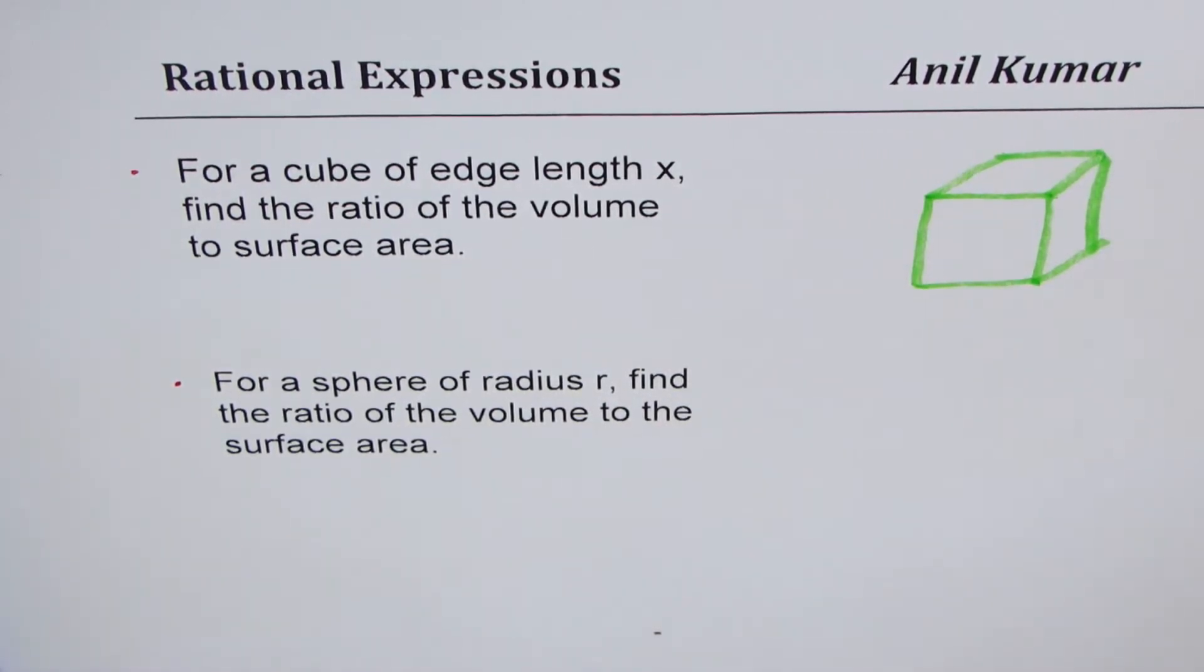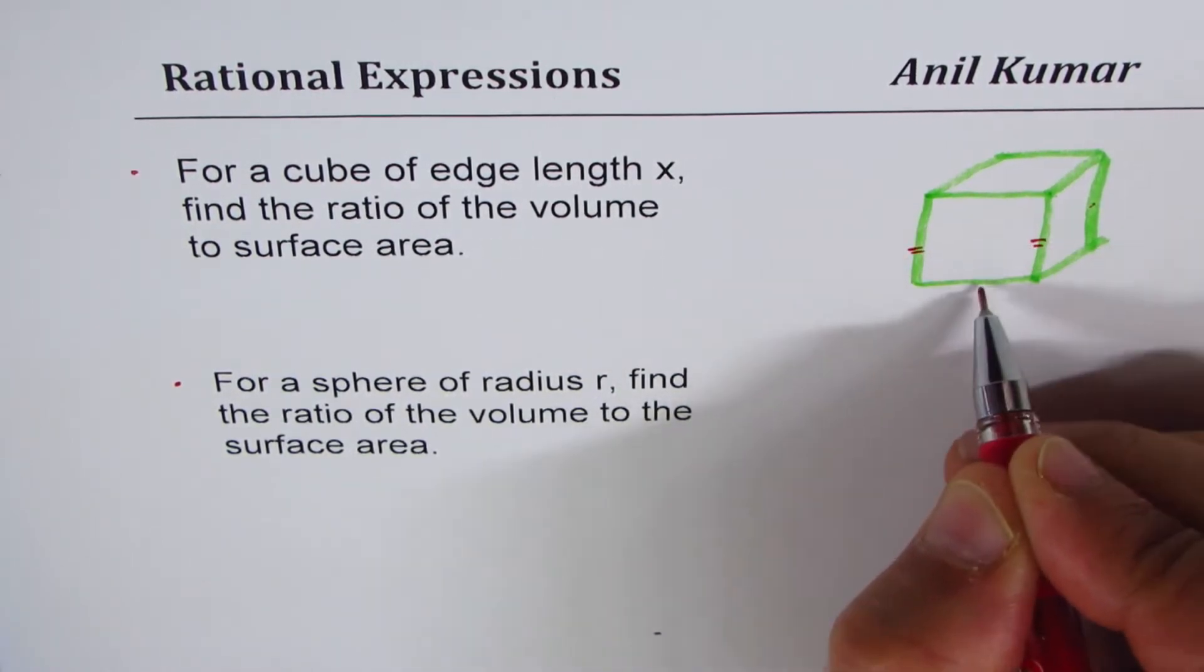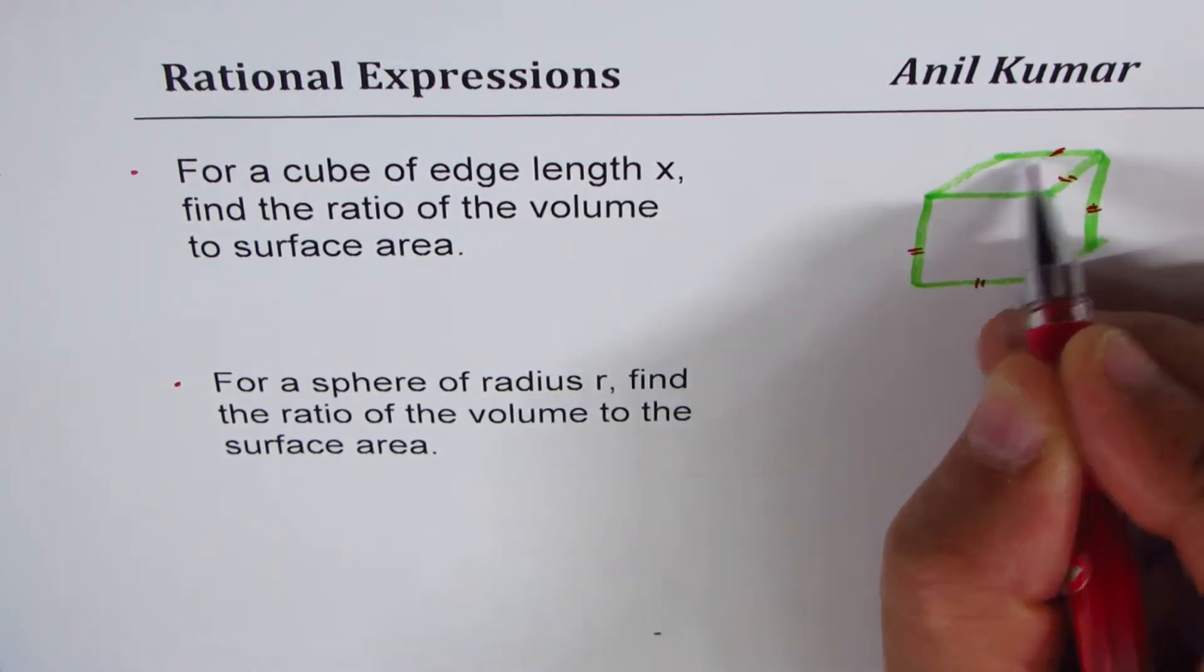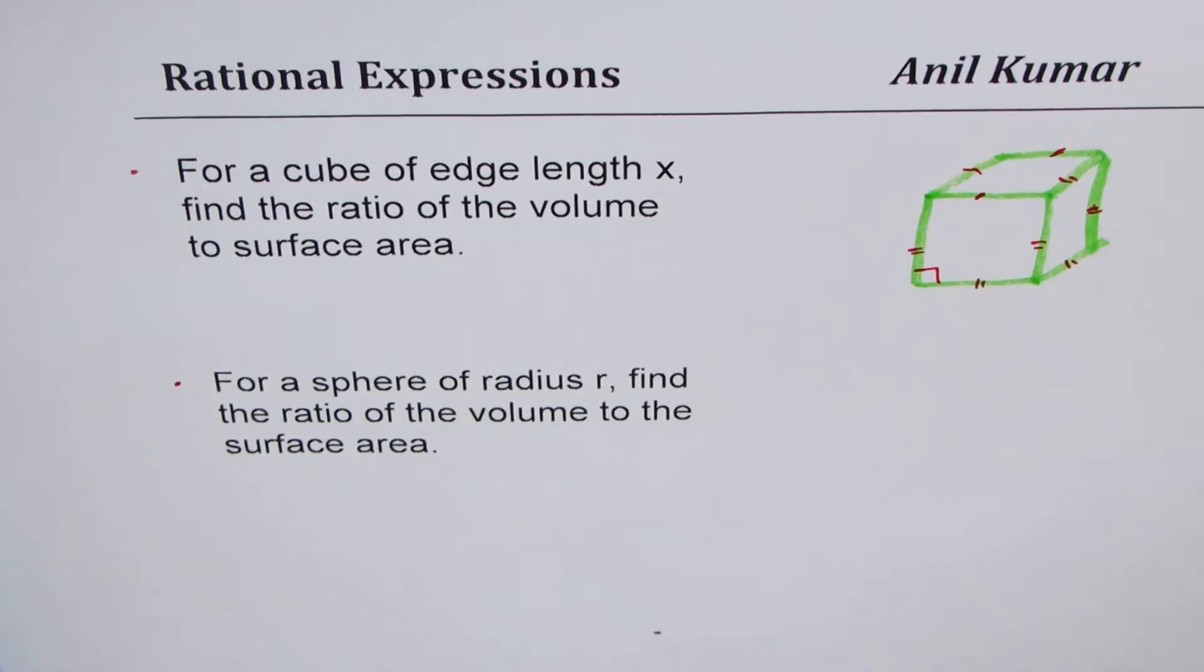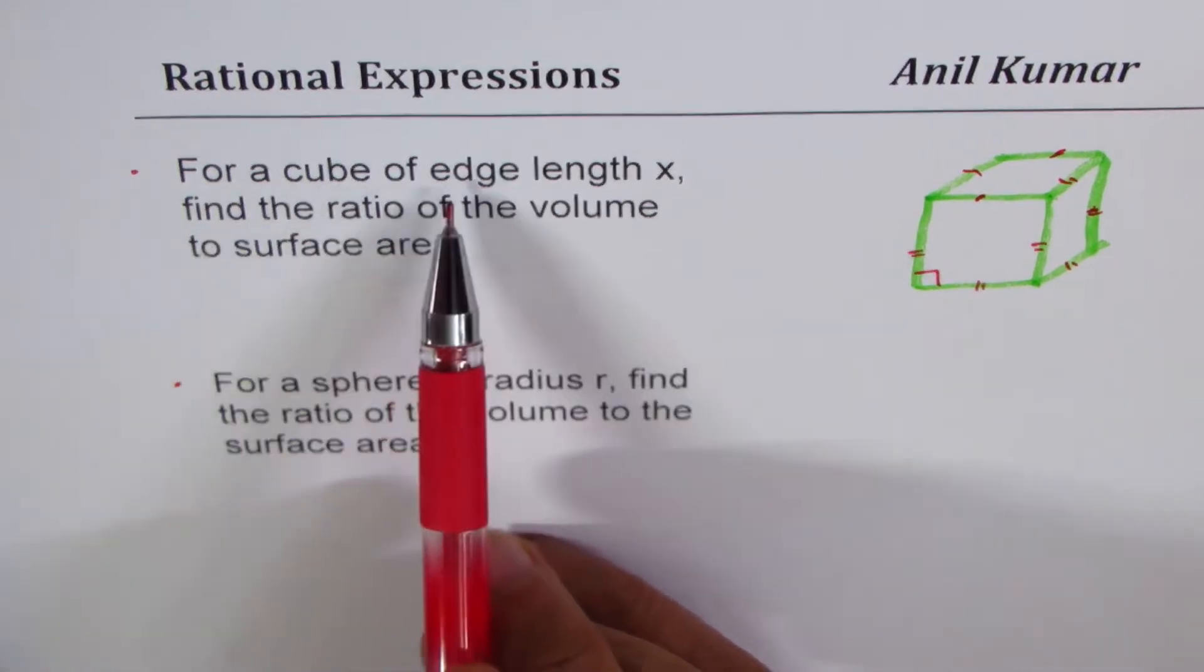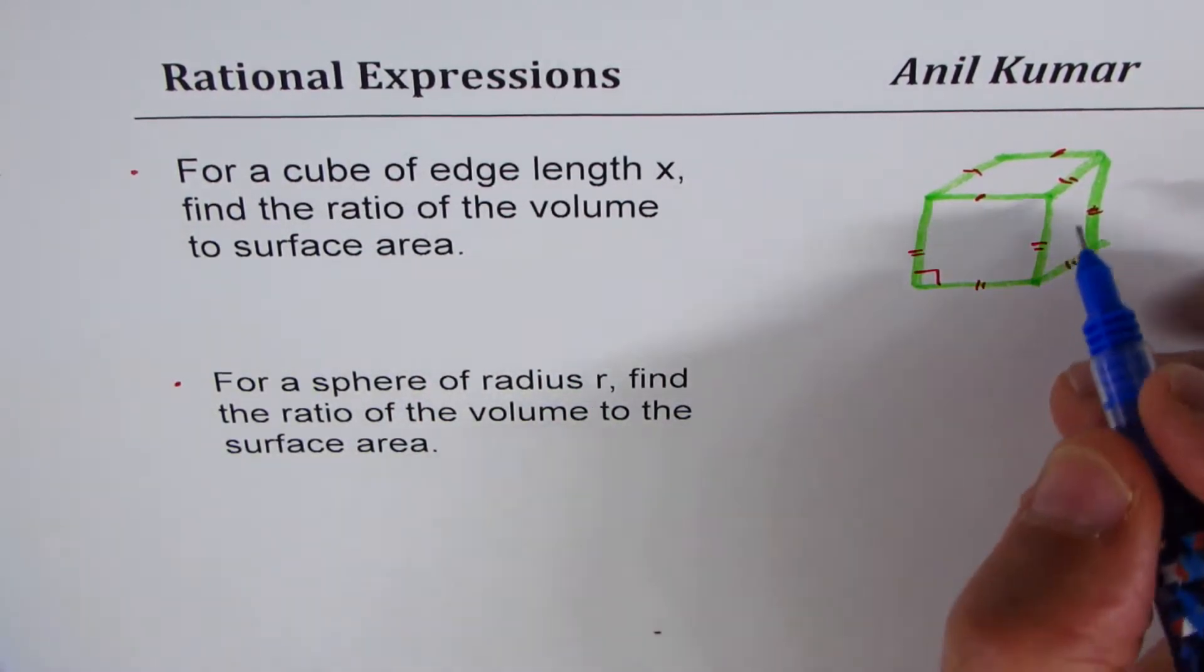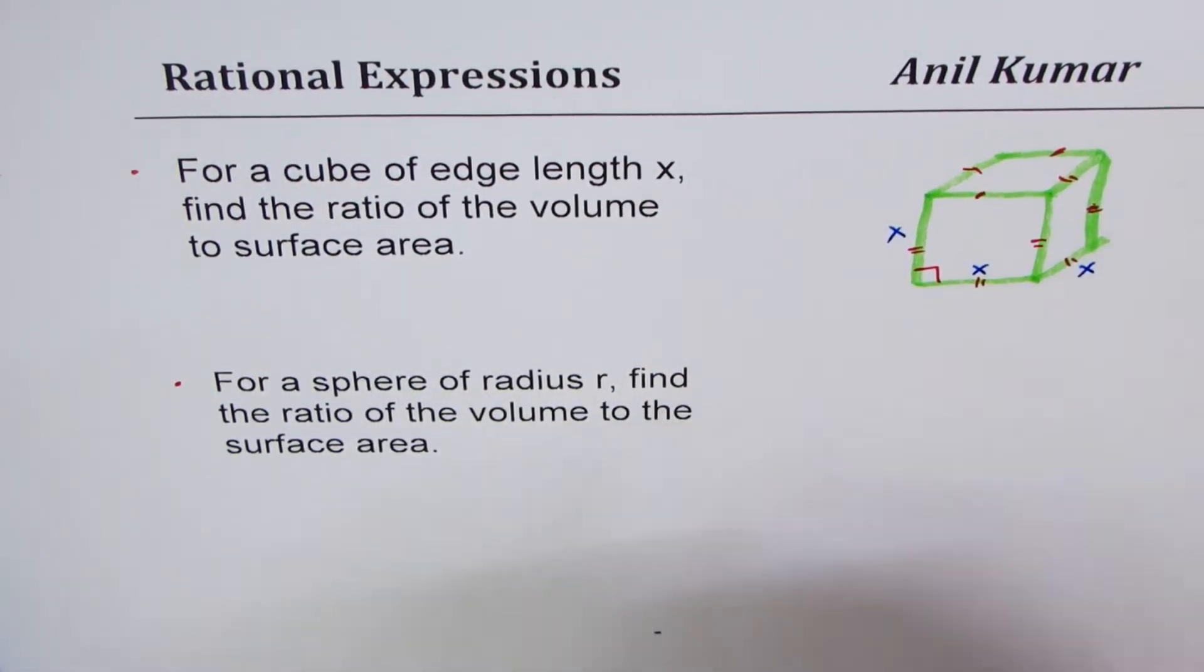Just to ensure that these are all equal sides, we can do like this. Just mark it all. Even this 90 degrees. So we have to take every care to do it. Now, for a cube of edge length x, that means each side is x units. So this is x, this is x, and this is x.